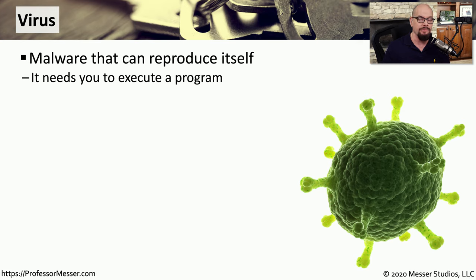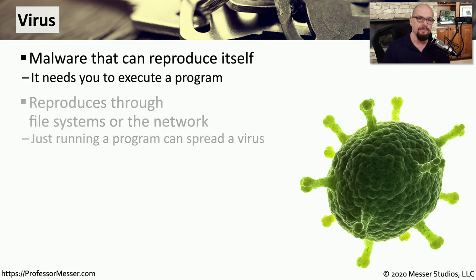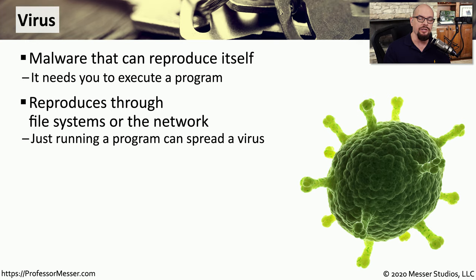This is something that differentiates a virus from a worm. The virus needs a human being to start the process, whereas a worm can jump from machine to machine without any human intervention whatsoever. Once the end user has launched the executable that starts the virus, it can use the existing file system or the network to replicate itself.